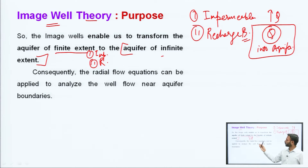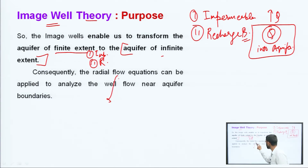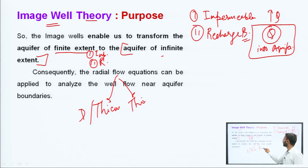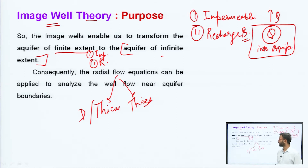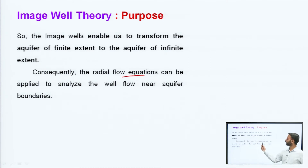Jo ki aap pehle, because of that boundary, you were not able to apply the radial flow equations — jismein ki aap baat karte hai Thiem's equation ki, ya phir Dupuit's equation ki, and Theis's equation jo ki hota hai unsteady state flow mein, jiske baare mein hum aage baat karenge. Now the radial flow equations can be applied to analyze the well flow near the aquifer boundaries, so you can get the discharge, whatever be the amount of discharge occurring there.